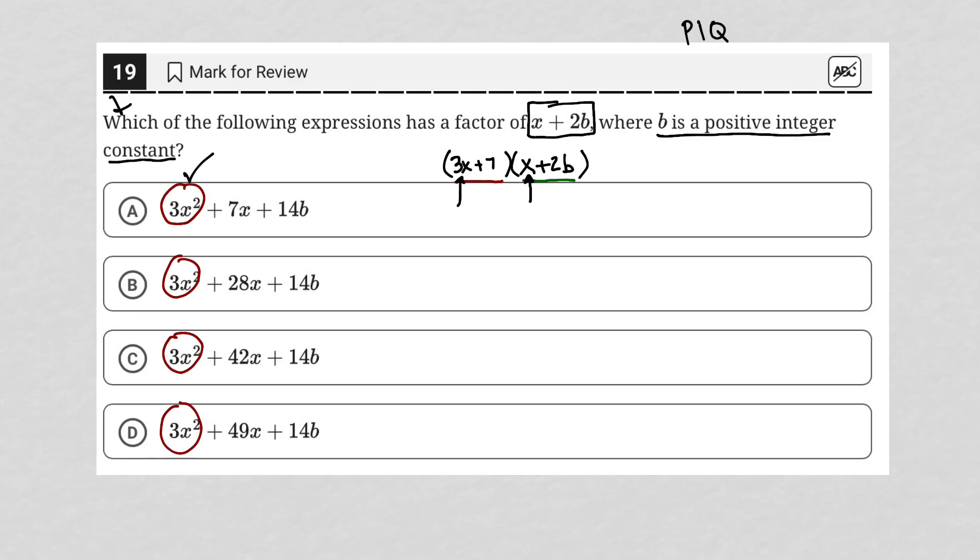I also need to have a positive 7 here. If this is a 2b here, which we know it is because the question tells us so, I must have a 7 here in order to get a 14b as my last term. Okay, so now I have quite a bit of information. I have the factored form of my trinomial with the two factors 3x plus 7 and x plus 2b.